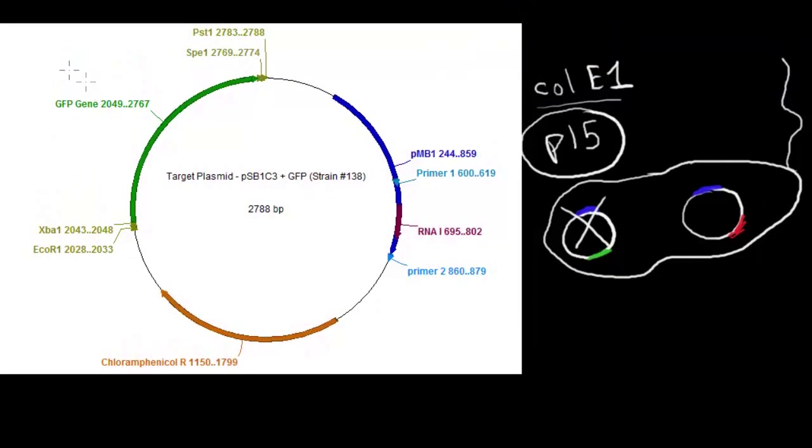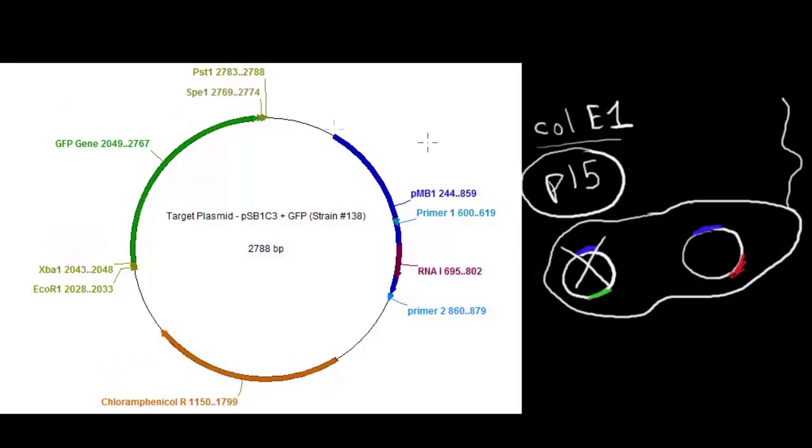And here you can see the GFP gene that I've outlined before. And of course all these are actually to scale. This is a plasmid as has been annotated in the program called APE. A-P-E. Which you can download for free.